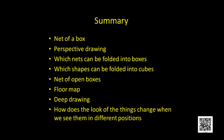Now we will summarize the things we learned today. First, we learned the net of a box and what it is. Then perspective drawing. Then which nets can be folded into boxes — we took examples of different nets and tested them. Similarly, we learned which shapes can be folded into cubes. Then we discussed the net of open boxes. Then we learned what is the floor map and what is the deep drawing. Then we discussed how the look of things changes when we see them from different positions. Thank you, children.